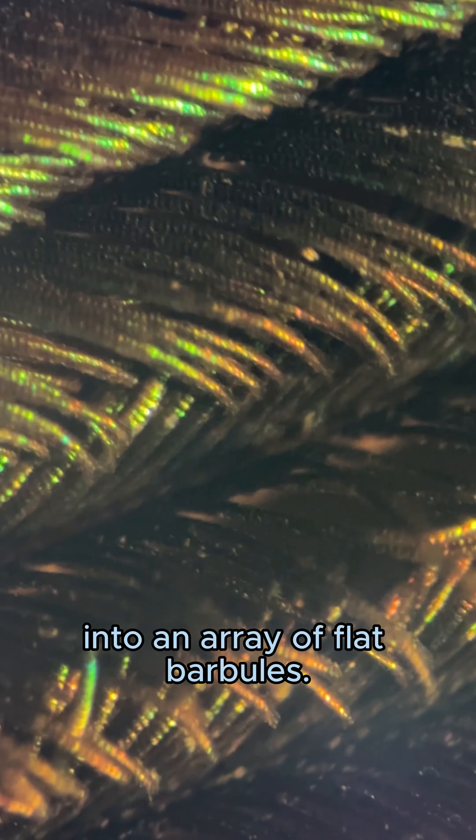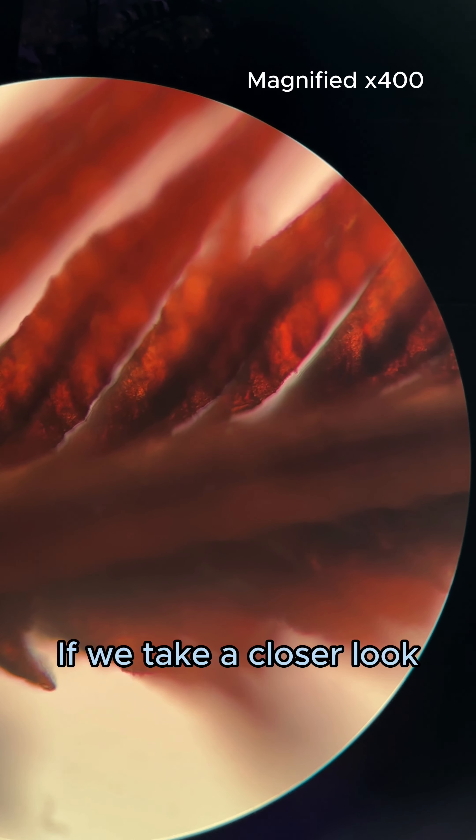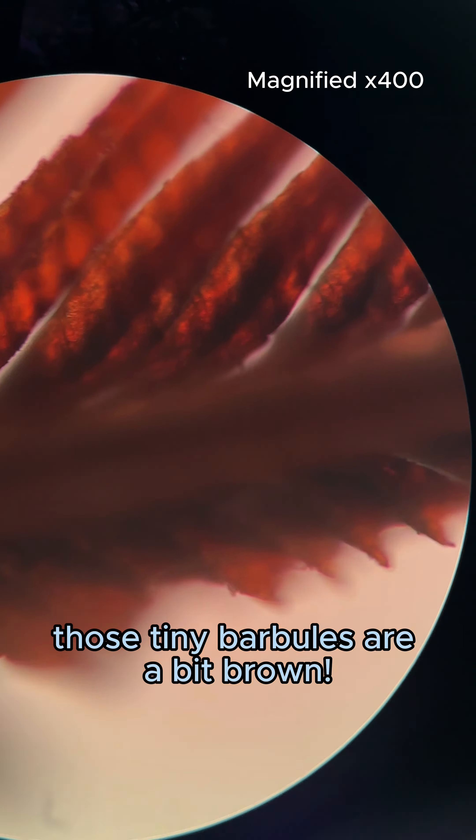The peacock's tail feathers are composed of fine barbs, which are even more finely divided into an array of flat barbules.